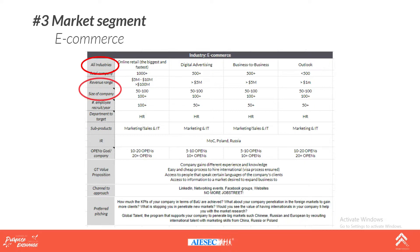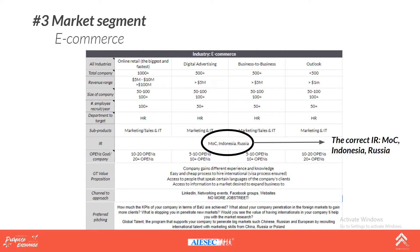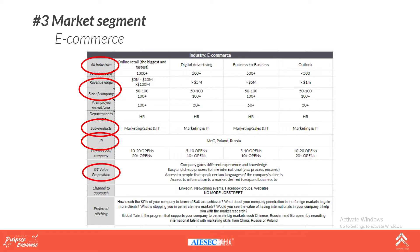Moving forward, we again have sub-industries, revenue range, company size, sub-products, IR, GT value proposition, and channel to approach. Each market segment has different details inside, and it is very important when selecting leads to align yourself with all the details — selling the right sub-product and the right IR.